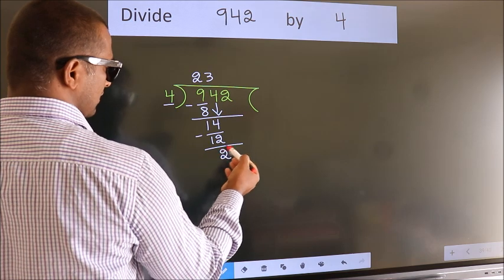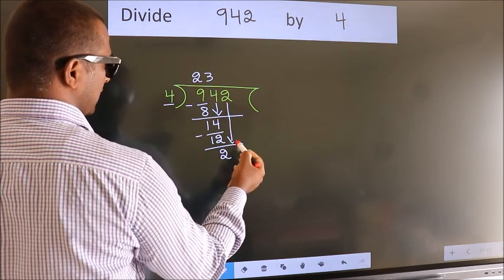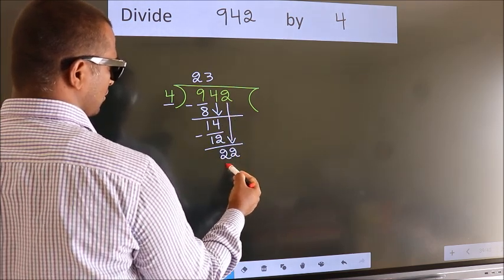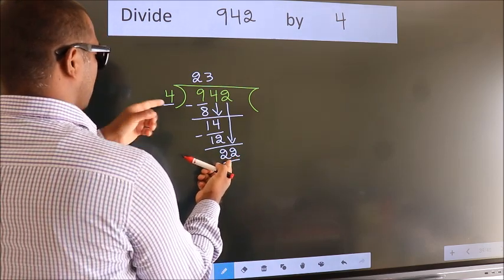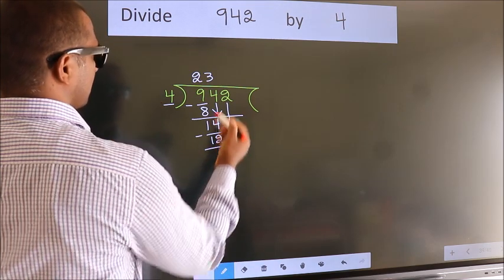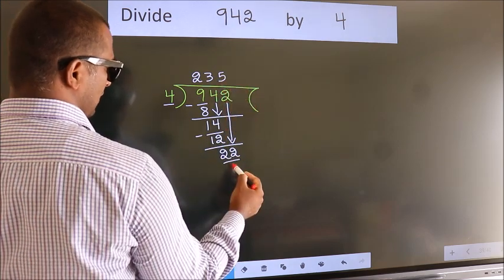After this, bring down the beside number. So, 2 down. So, 22. A number close to 22 in 4 table is 4 fives, 20.